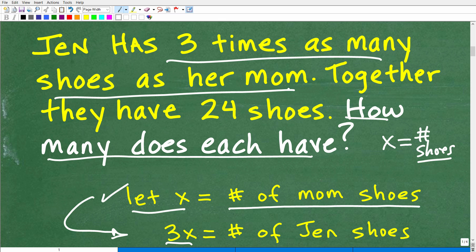So I'm going to let X equal the mom's number of shoes because it's pretty easy, therefore to represent Jen's number of shoes as she has three times as many shoes as her mom. So if her mom has X shoes, then Jen has three times that many shoes, which would be 3X. So the mom's shoes is X. The number of shoes the mom has is X. The number of shoes Jen has would be 3X.